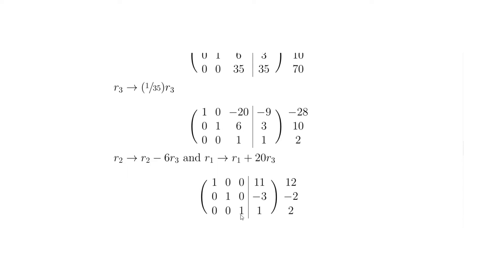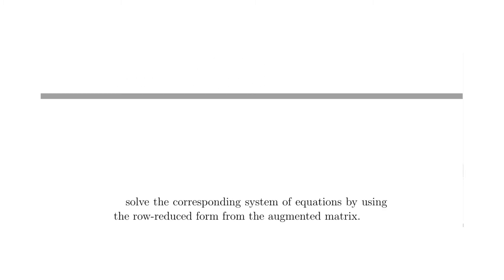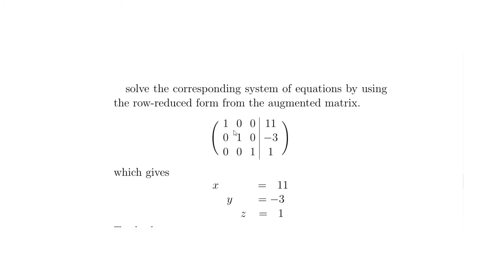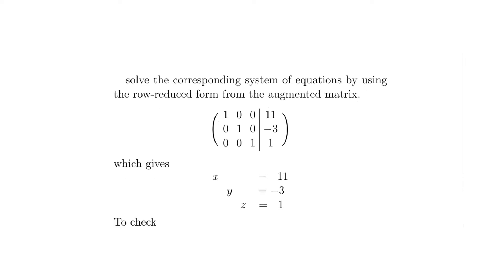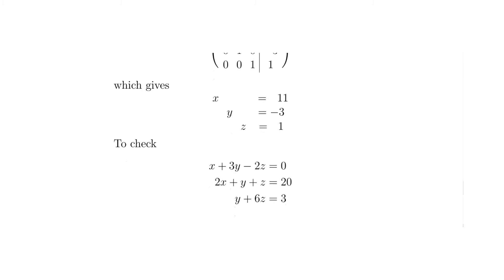Now we're in row-reduced form — we've got ones down all the diagonals and zeros everywhere else. This is our identity matrix for a 3×3 system. The X's, Y's, and Z's are all isolated, so we can read off the solutions directly: X = 11, Y = -3, and Z = 1.